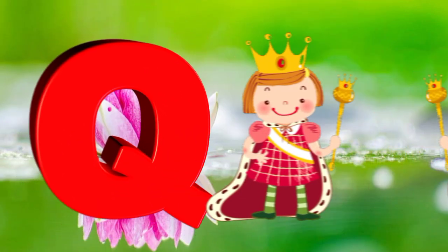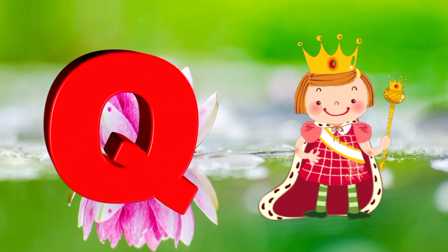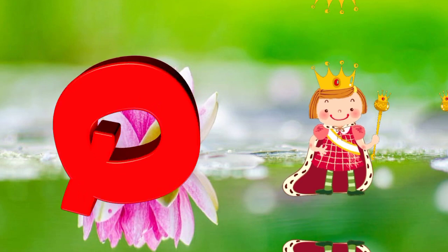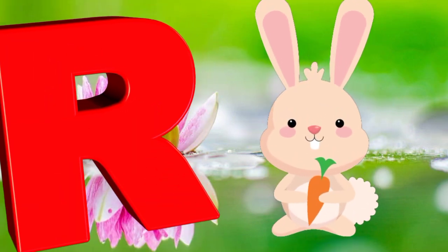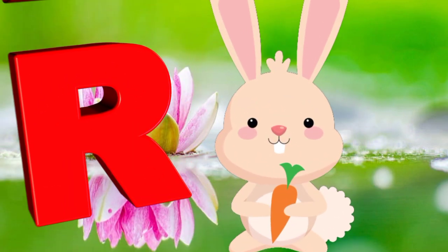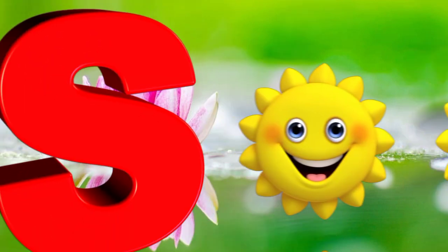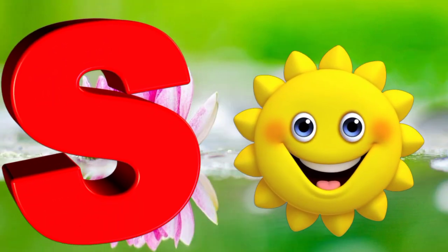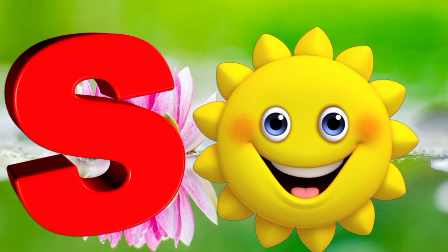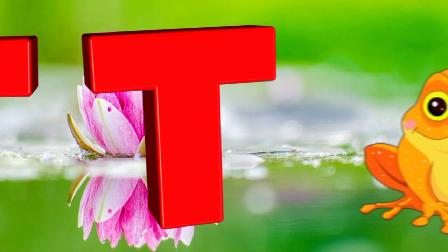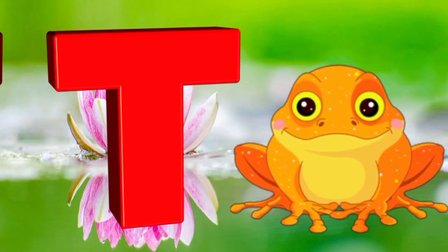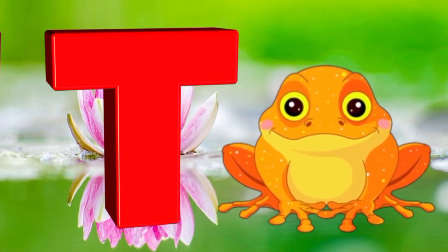Q is for queen, k-k-queen. R is for rabbit, r-r-rabbit. S is for sun, s-s-sun. T is for toad, t-t-toad.